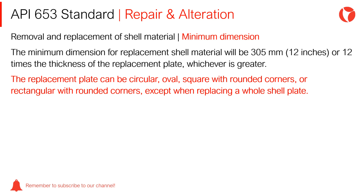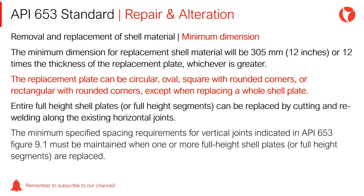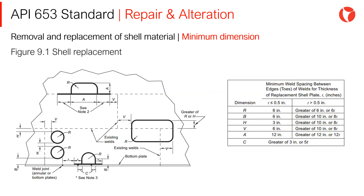The replacement plate can be circular, oval, square with rounded corners, or rectangular with rounded corners, except when replacing a whole shell plate. Entire full-height shell plates or full-height segments can be replaced by cutting and re-welding along the existing horizontal joints. The minimum specified spacing requirements for vertical joints indicated in API 653 figure 9.1 must be maintained. Figure 9.1 shows the minimum requirements for thicknesses and distances when replacing parts of the shell or entire shell plates.